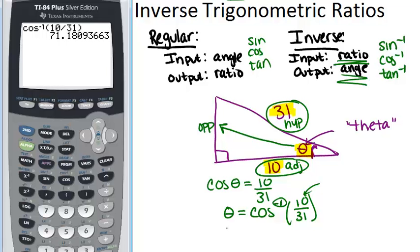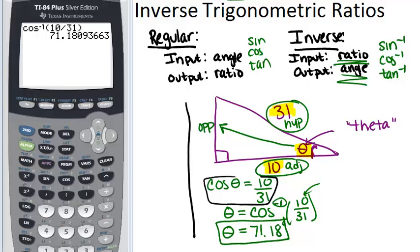So what that is, is the degrees of angle theta: 71.18 degrees. So by using inverse trig, you can solve for missing angles in right triangles. Just like with regular trig, you can solve for missing sides in right triangles. And just remember, you set up the problems in exactly the same way. Even the equation is the same. It's just once you realize you're solving for an angle, you flip it around and use the inverse function to help you get your answer.